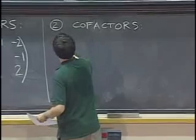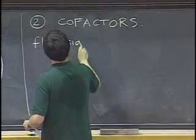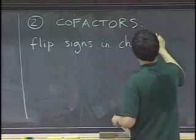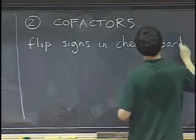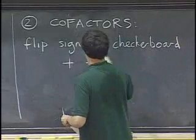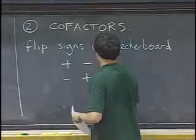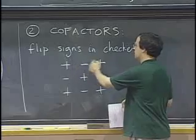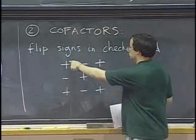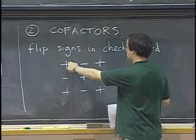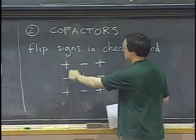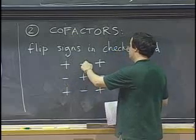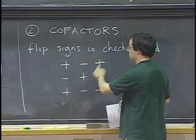OK, so what we do is we flip signs according to a checkerboard diagram. So, you start with a plus in the upper left corner, and you alternate pluses and minuses. OK, so the rule is if there's a plus somewhere, then there's a minus next to it and below it. And then, below a minus or to the right of a minus, there's a plus.